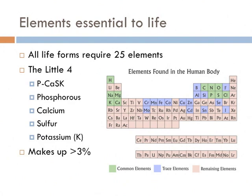Of the other 25 elements that we need, there's what's known as the little four: phosphorus, calcium, sulfur, and potassium. Phosphorus and potassium are two elements you can see on fertilizer labels. It's NPK: nitrogen, phosphorus, and potassium. Those are in limited supply in the soil and plants use them to grow. These only make up about 3% of living organisms.